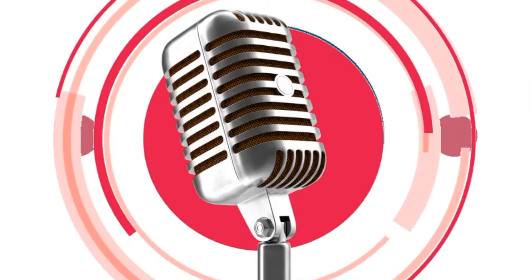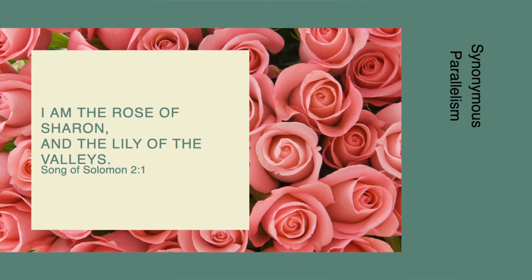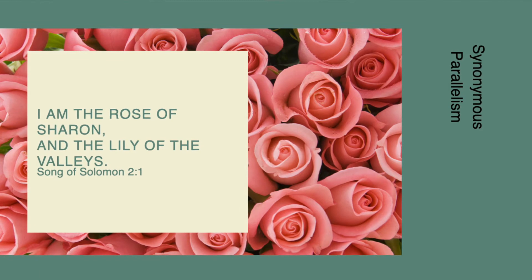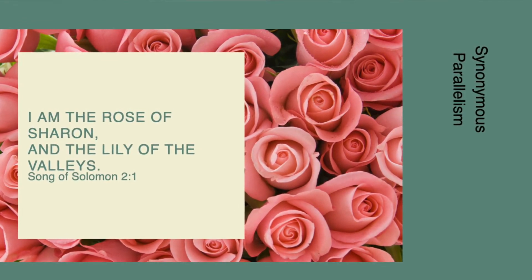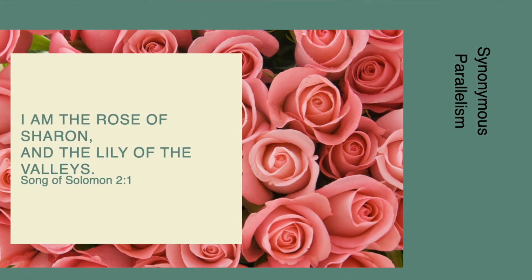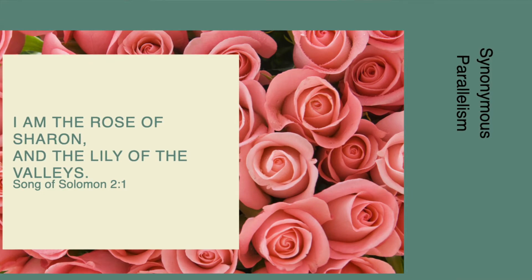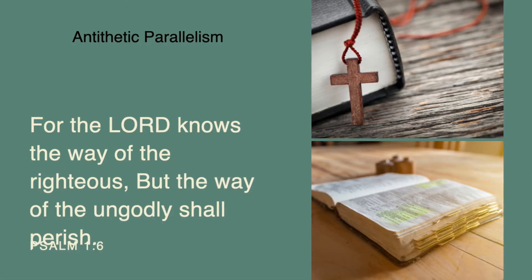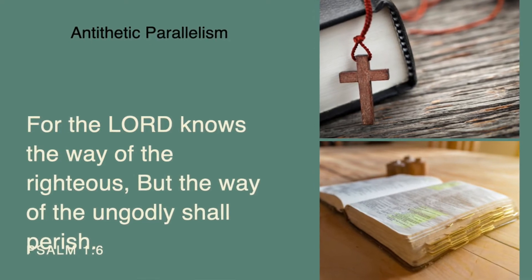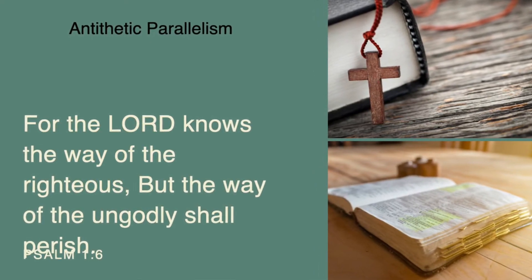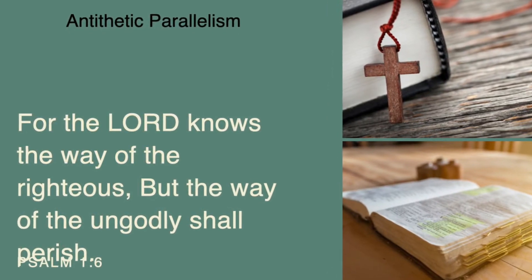There's synonymous parallelism — here's an example from the Song of Songs: 'I am the rose of Sharon and the lily of the valley.' The second line says just about the same thing as the first in a little different way. That's parallelism. And then there's antithetic parallelism, which uses contrast and juxtaposition — like, 'For the Lord knows the way of the righteous, but the way of the ungodly shall perish.' That's Hebrew parallelism — a poetic expression.